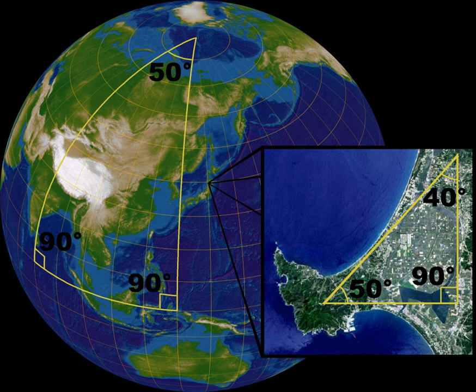The proof of Proposition 1.16 given by Euclid is often cited as one place where Euclid gives a flawed proof. Euclid proves the exterior angle theorem by